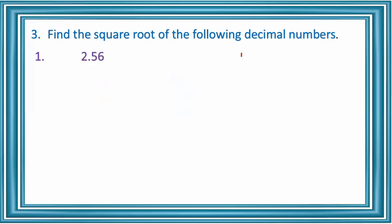Next, find the square root of the following decimal numbers. We already learned how to find the square root of a number. Here we can find the square root of the decimal number 2.56. First, write the number 2.56 and leave a little gap in between, then draw the line as we did before.